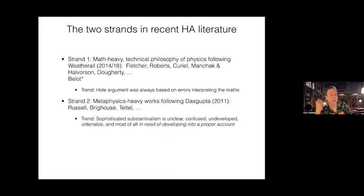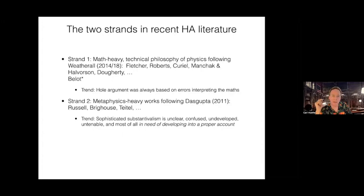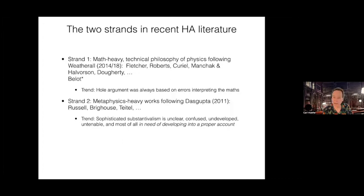First, there's a strand involving rather technical philosophy of physics with heavy-duty mathematics, departing from a paper published by Weatherall in 2014 online and later in 2018 in print. Contributors include Sam Fletcher, Roberts himself, Eric Curiel, Manchak and Halverson, and John Doherty. I also want to mention Belot with an asterisk — he wrote an interesting paper called '50 Million Elvis Fans Can't Be Wrong,' which I won't talk about today.